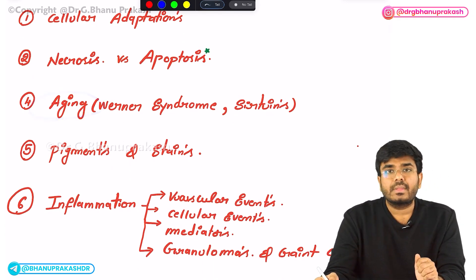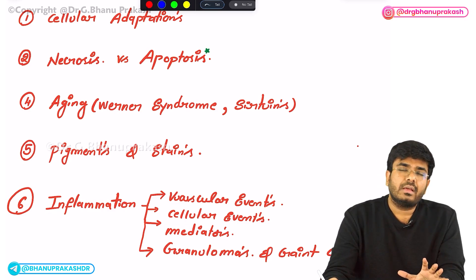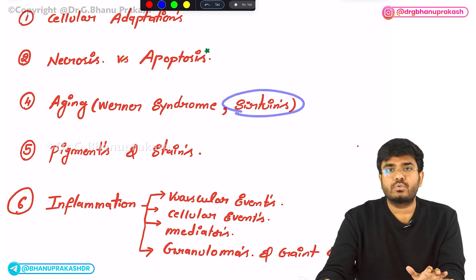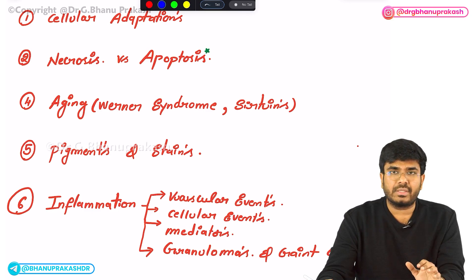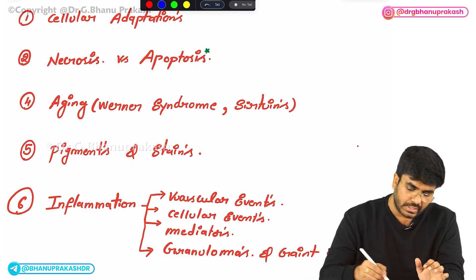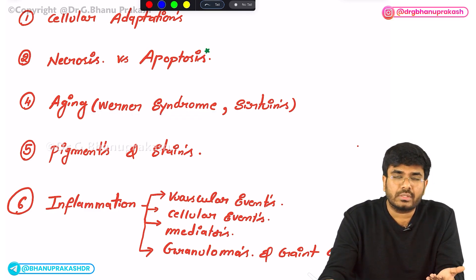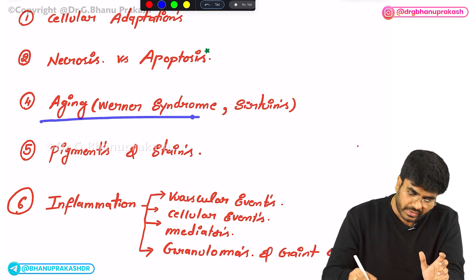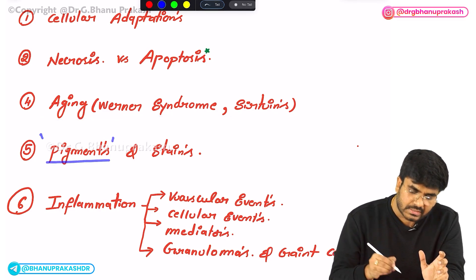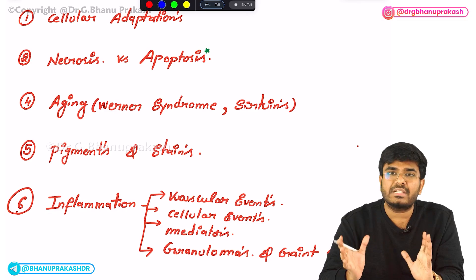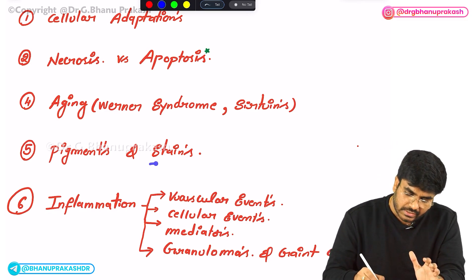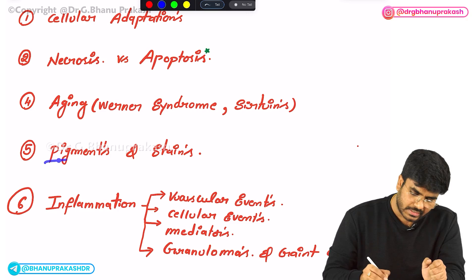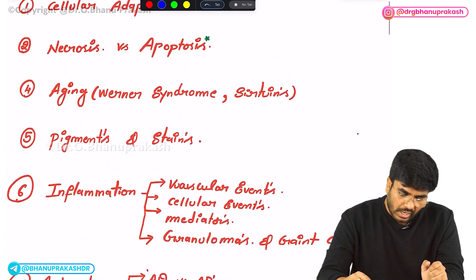Regarding aging, they will ask about telomeres and telomerases, how telomerase is helpful in delaying the aging process, and how fasting can delay aging. Werner syndrome and progeria are early aging disorders where the person ages very rapidly. Progeroid syndromes and aging topics are very important for the exam. You also have to know about different intracellular accumulations, different pigments within the cell, different types of pigments and stains used in pathology.